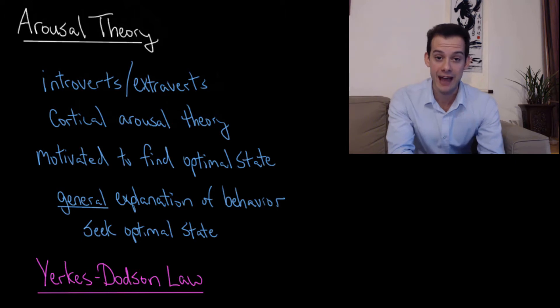Introverts, on the other hand, already have higher levels of cortical arousal. What this means is that they're not as motivated to seek out additional arousal, and so they're less likely to seek out things like social stimulation because they're already at some optimal level of cortical arousal. So the idea of arousal theory is that we can apply this not just to this personality trait, but to behavior in general.